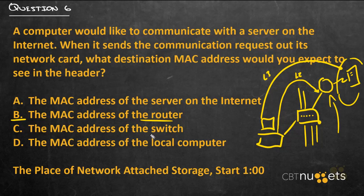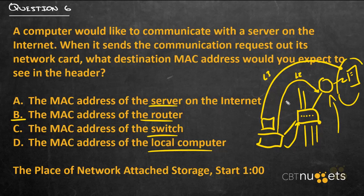On the other answer choices: the switch learns MAC addresses, but that's not the destination MAC address. The computer would have no reason to put itself as the destination, although it would be the source. And the computer has no way of figuring out the MAC address of a server on the internet — and even if it did, it's not connected to the switch that plugs into that server, so it would never be able to reach it that way.